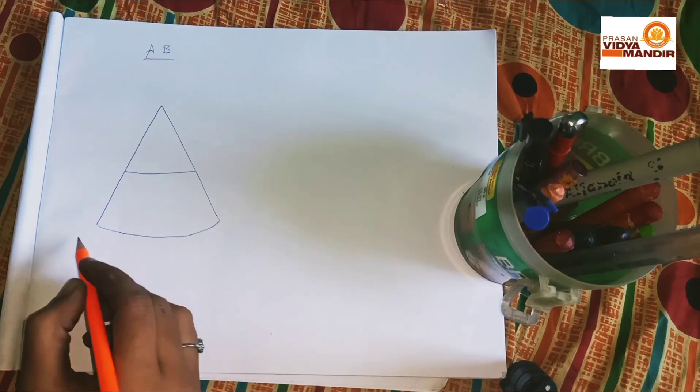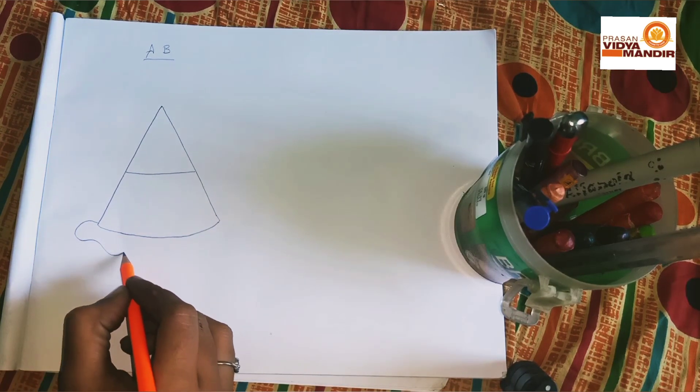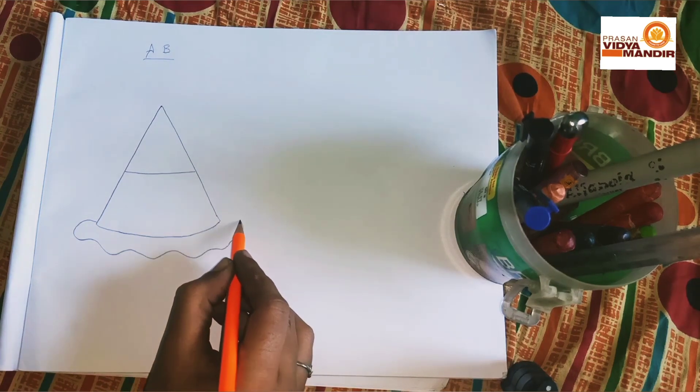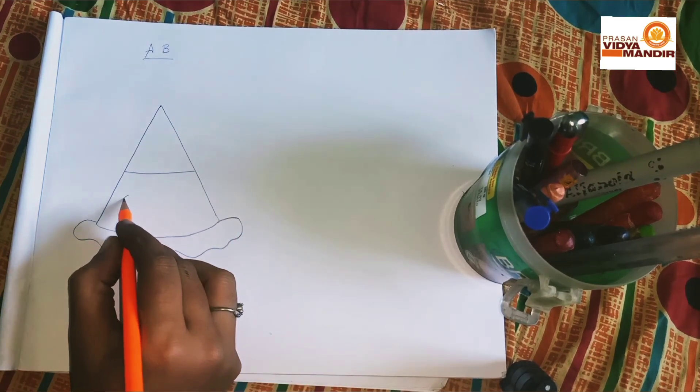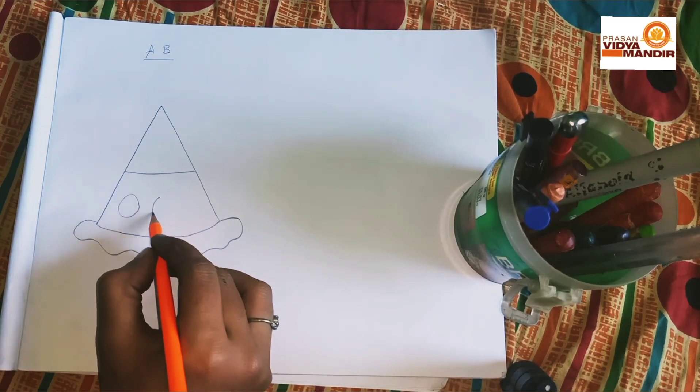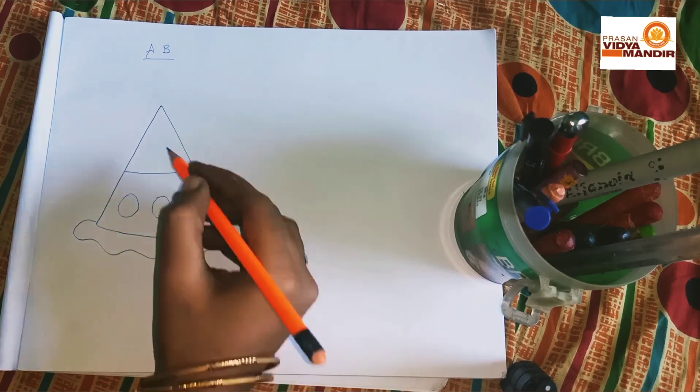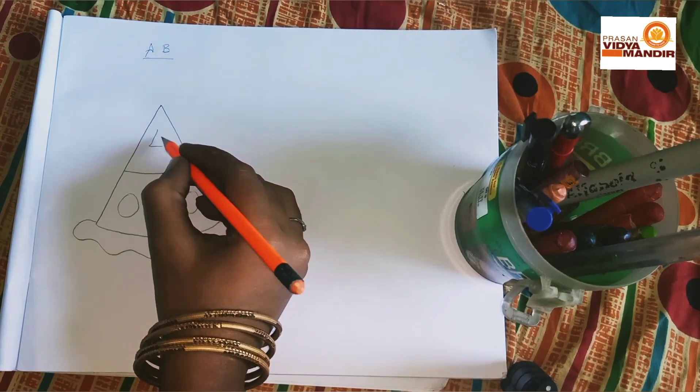After that, draw a simple wave line like this. Then draw the shapes inside the cap like circle, triangle and square.